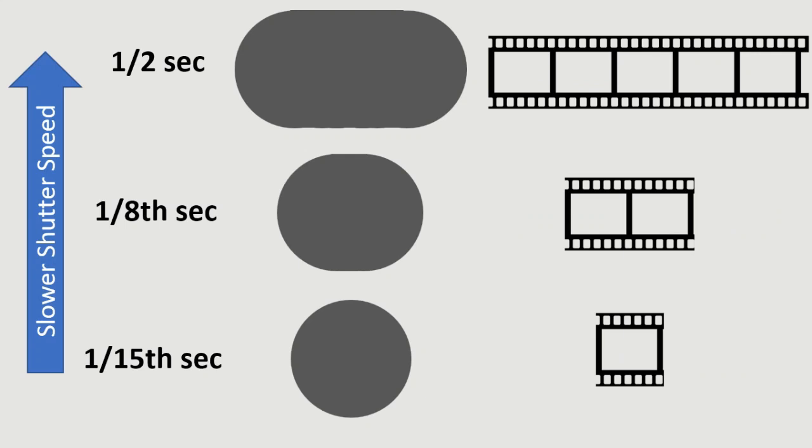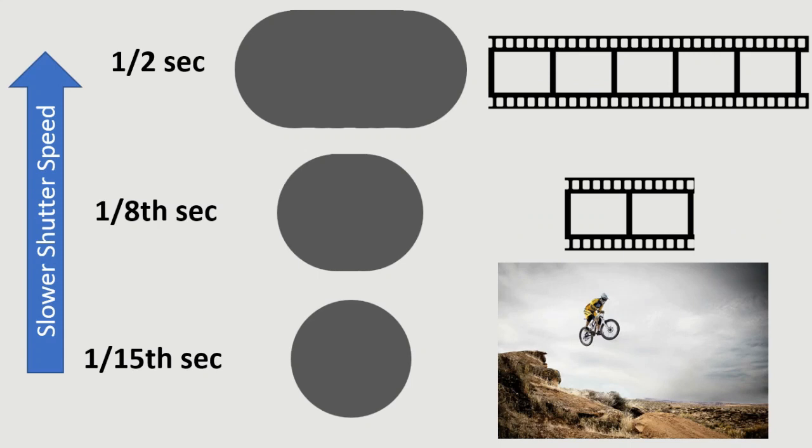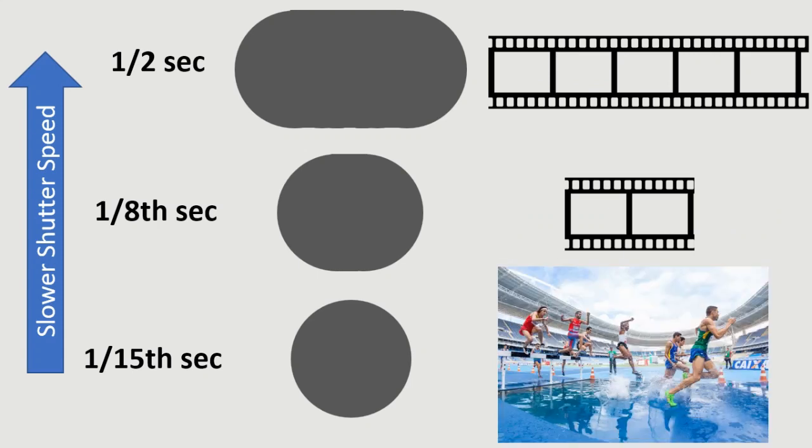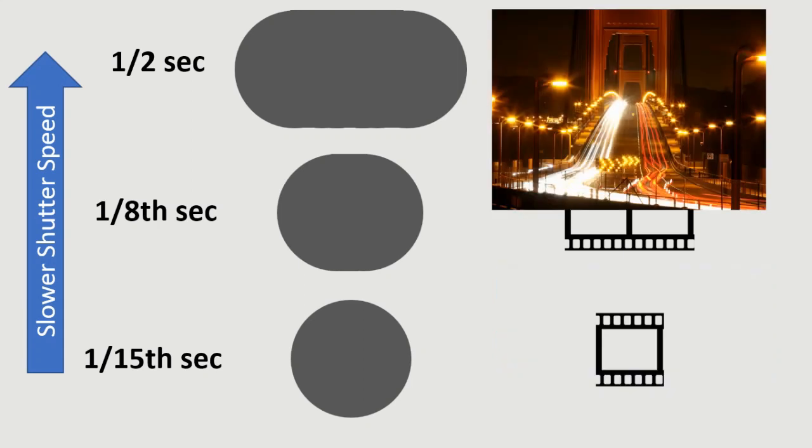This is how photographers use shutter speed to either freeze an object, like the motorcycle in mid-air, or runners in a triathlon, or even cooler, get those streaks in images like the headlights and taillights of traffic on the Golden Gate Bridge.